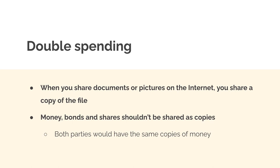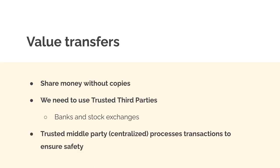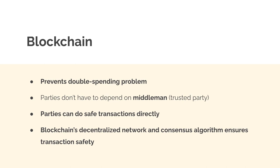Something like money can't be shared as a copy because then it would just be forgery. If I sent you a copy of my money for a service, we'd both still have the money — so I'm not actually sending you value. You also shouldn't share bonds or shares as a copy. That is the double spending problem. Blockchain solved it: value transfer allows you to share money without copies, but traditionally you needed a trusted third party like a bank or stock exchange. The blockchain doesn't need the middleman. Instead, we can do safe transactions directly, thanks to blockchain's decentralized network and consensus algorithm to ensure transaction safety and prevent fraud.